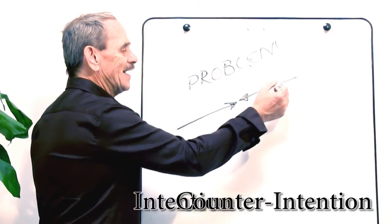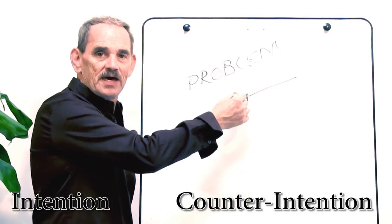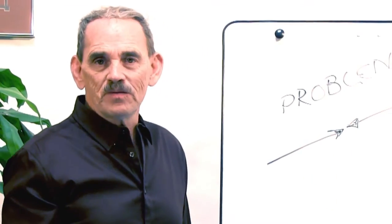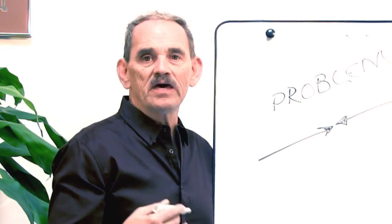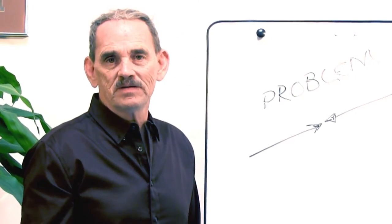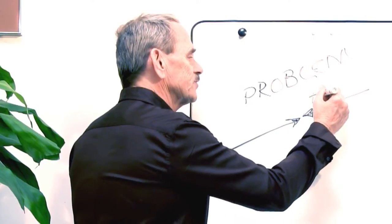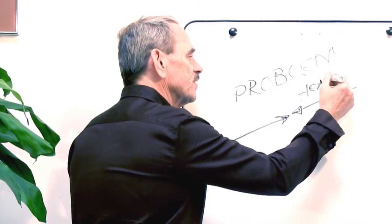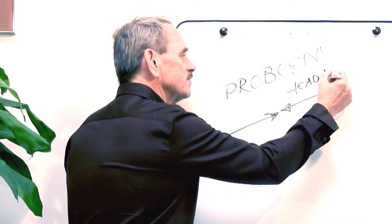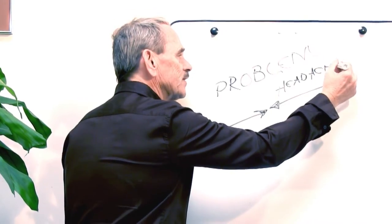Then you have a counterintention to that intention. An example of this would be, let's say a girl wants to be a ballerina, and she's practicing every day. However, she has headaches. So she's going for that goal, and yet these headaches continually get in her way.